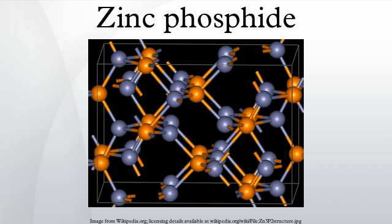Other pesticides similar to zinc phosphide are aluminium phosphide and calcium phosphide. Zinc phosphide is typically added to rodent baits in an amount of around 0.75 to 2%. Such baits have a strong, pungent garlic-like odor characteristic of phosphine liberated by hydrolysis. The odor attracts rodents but has a repulsive effect on other animals.